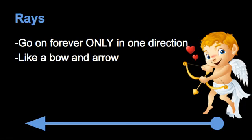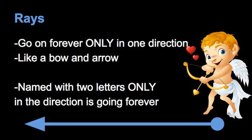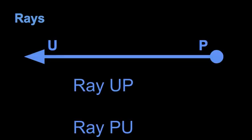Finally, let's talk about rays. Rays are kind of the oddball — they go on and on forever only in one direction. I like to think of them like a bow and arrow. If you've ever seen a bow and arrow like Cupid shoots, he shoots it and it only goes one direction — it can't go the other direction at all. So rays are really important to think about when you're naming them, because they only go one direction, and you have to name it going in the direction that it's going forever.